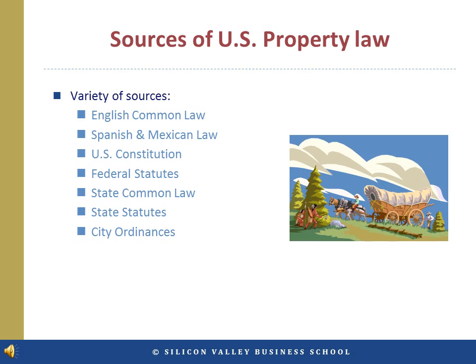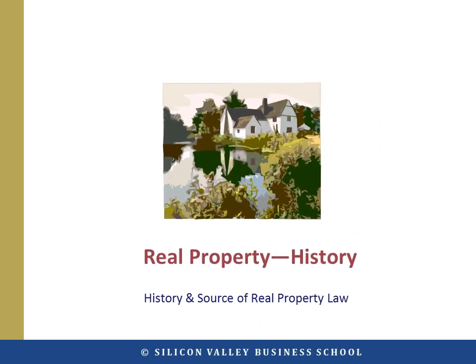Of course, the US Constitution is the supreme law of the land, and some of the most significant property laws were written into the Constitution or subsequent amendments. Federal and state statutes and city and local ordinances are significant sources of property-related rules and regulations.